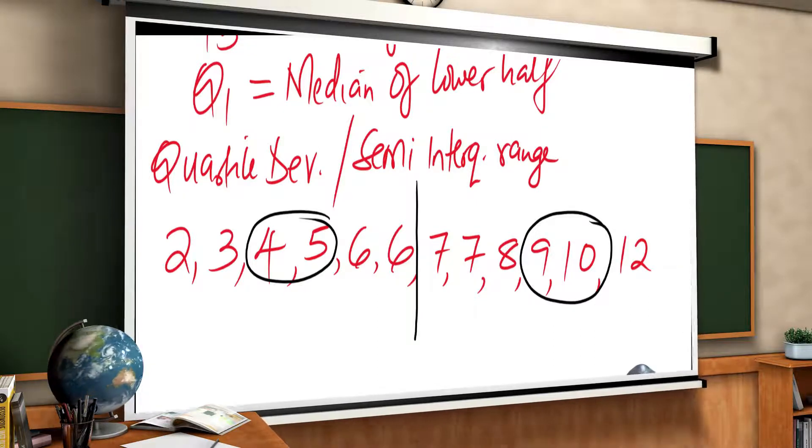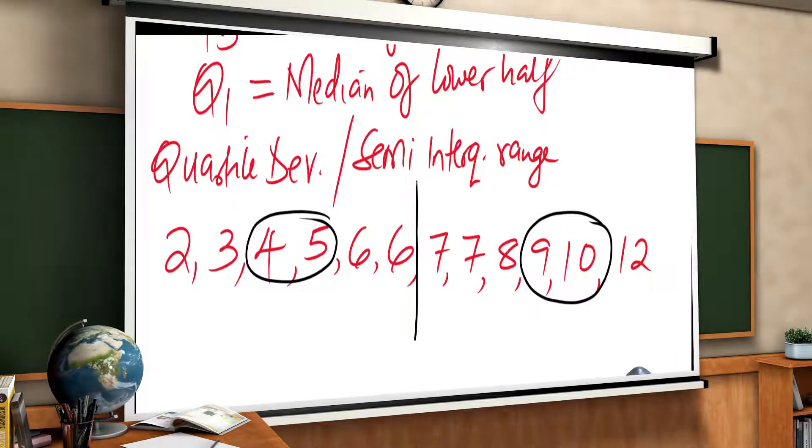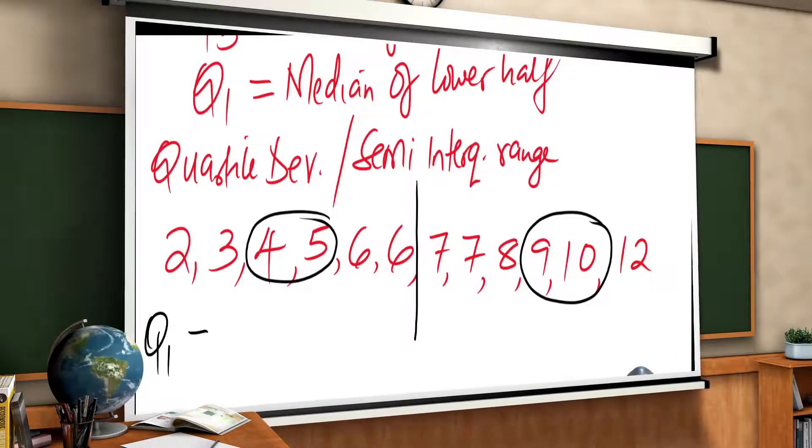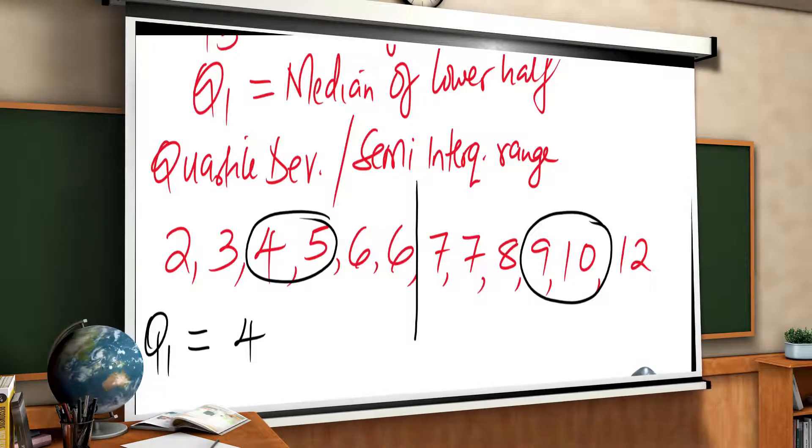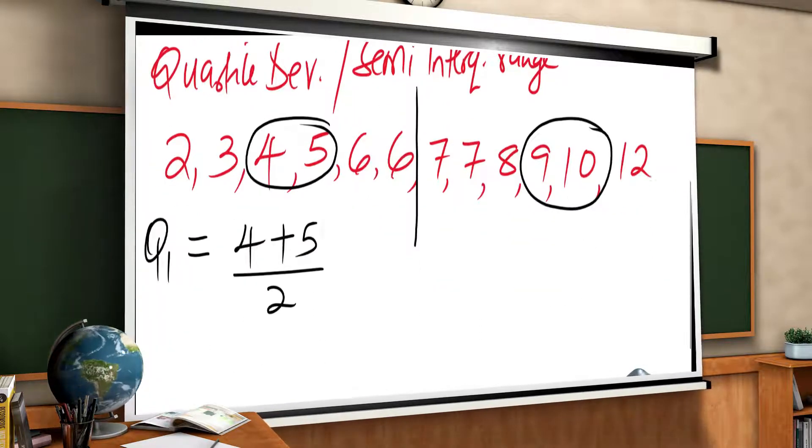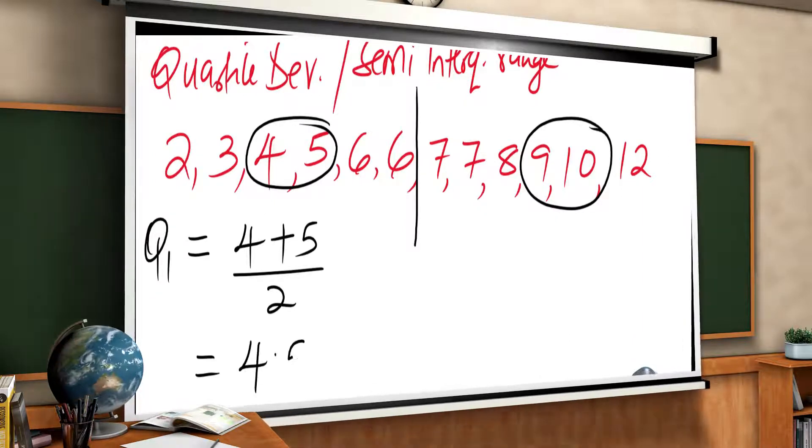So now to get the median of the, this is a Q1, will be now obtained by the median of the lower half, which is 4 plus 5, divided by 2. This will give 9, divided by 2. This will give 4.5.